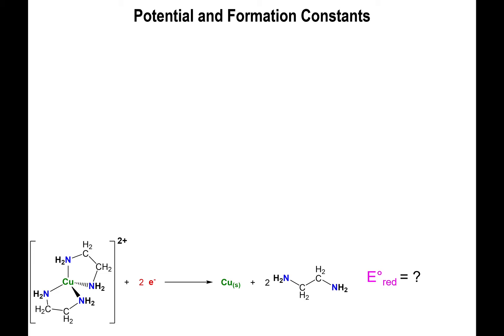For instance, you could be interested in finding out, we know that the reduction of copper 2+, which is what you have right here, to copper metal has a specific value based on the reduction potential, but that's if you have nothing other than copper 2+ and the copper metal.